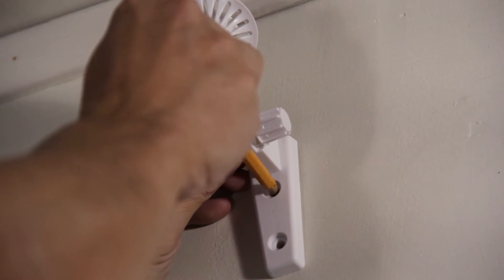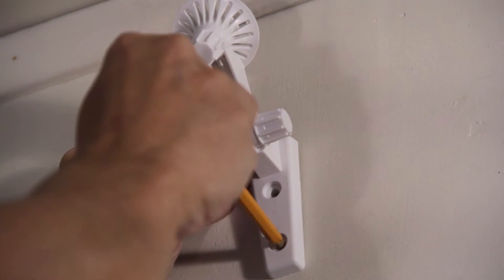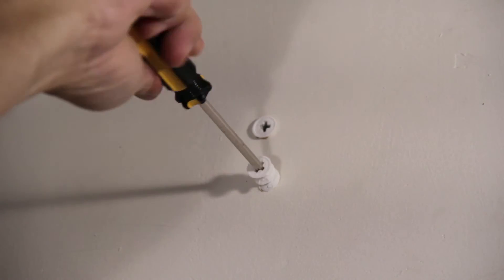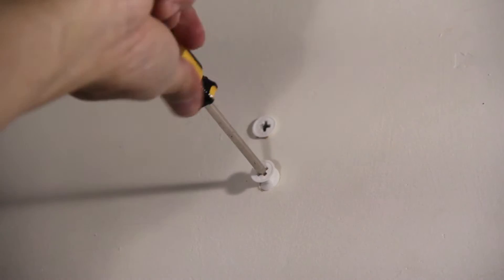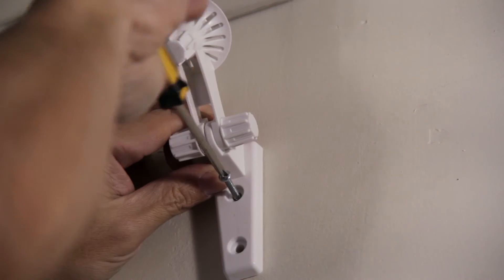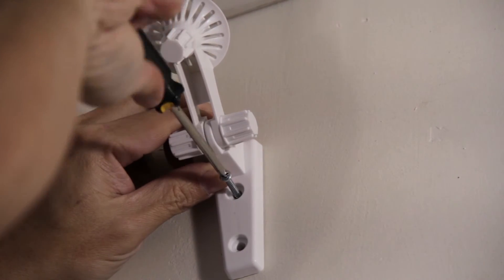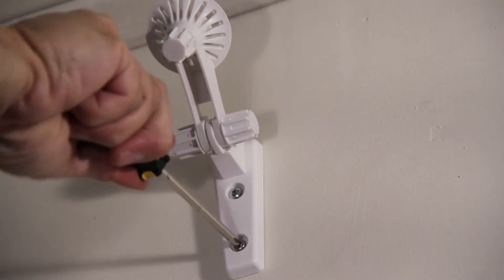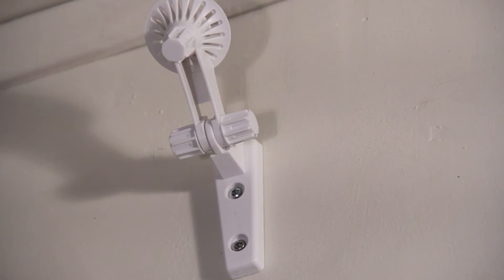Now take the bracket and pencil in the holes for the screws. Then screw in the drywall screws into the pencil marks. Then screw in the metal screws. And make sure the mount is properly fastened.